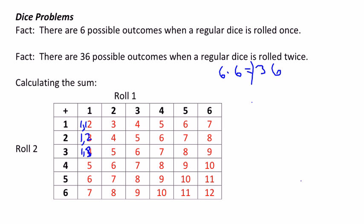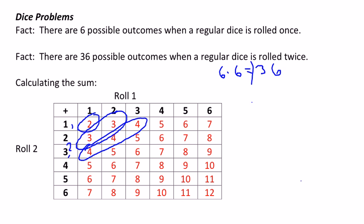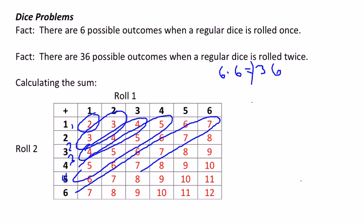When you look at the sums, there's a really nice pattern. There's exactly one way to get a two, two ways to get a three, three ways to get a four, four ways to get a five, five ways to get a six, and six ways to get a seven.